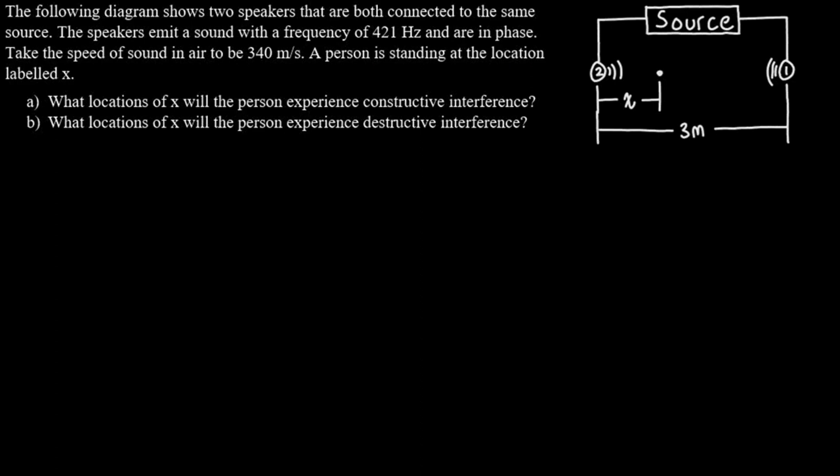First, they gave us the frequency but we really want the wavelength. Using the equation from before — speed of sound of 340 meters per second divided by frequency of 421 hertz — that gives us a wavelength of 0.808 meters.